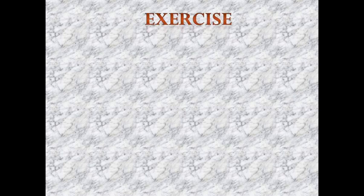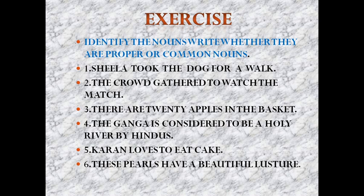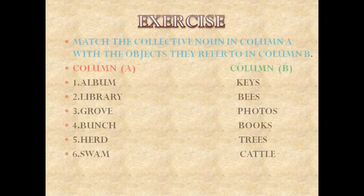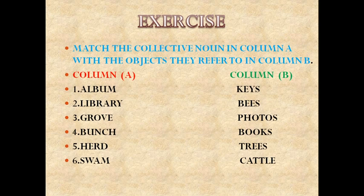Now, exercise time. Identify the nouns and write whether they are proper or common nouns. In front of you there are six examples — just read and identify proper and common nouns. One more exercise: match the collective nouns in column A with the objects they refer to in column B. You have different kinds of collective nouns, so you have to match these.